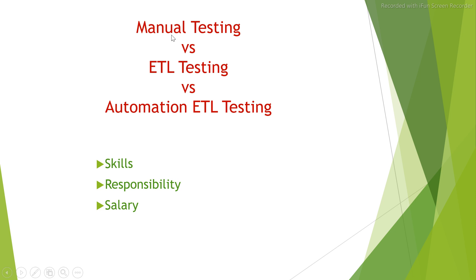The three streams are: manual testing, which I consider as functional or web testing; ETL testing that is manual; and then automation ETL testing. So three different streams of testing. Based on these parameters, let's try to understand each of them, because all three are very key aspects for deciding your job and how much effort you need to put in. These three parameters are crucial for the comparative analysis.